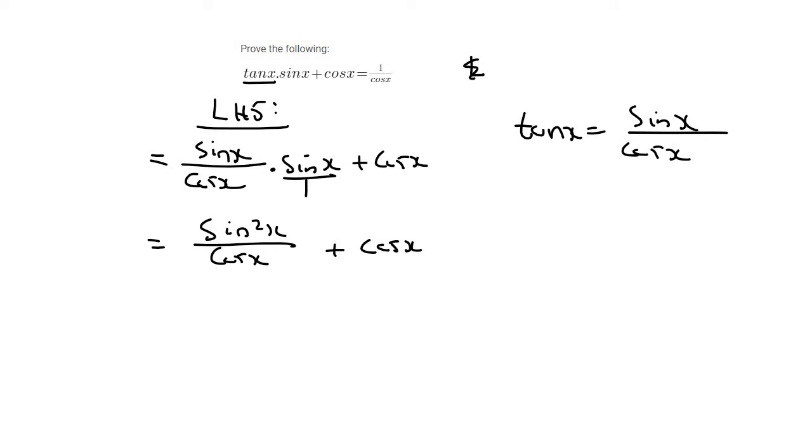Now what you should identify is we have a denominator. So we need to get a common denominator, because this cos x on the right is currently cos x over 1. And so the lowest common denominator here is going to be cos x.